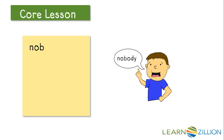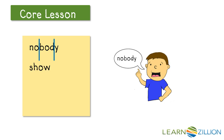Here are a few more examples. If we broke this up right after those vowels, we'd have open sounds which would say 'no-bo-dee' — that doesn't work. Let's try moving it here: 'nobody.' The OW leaves us an open vowel sound O: show. And here, we can split it right over here: overt.